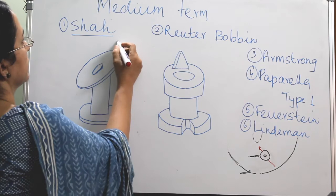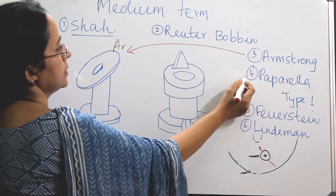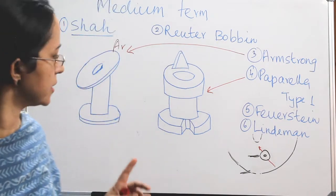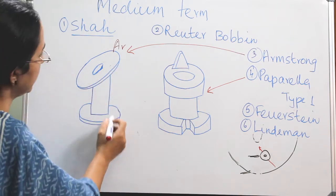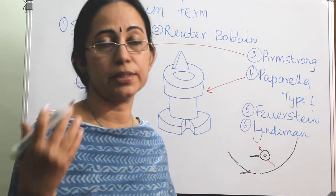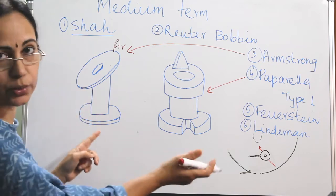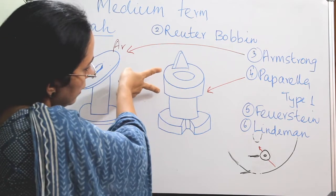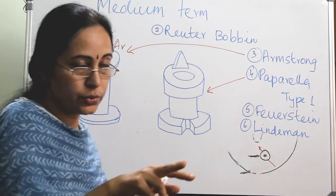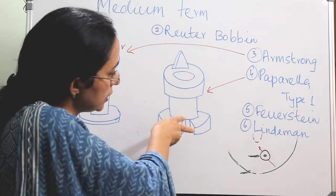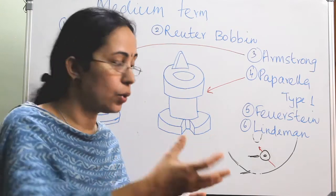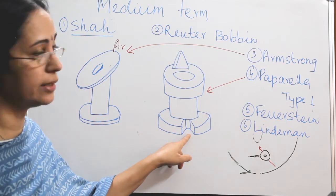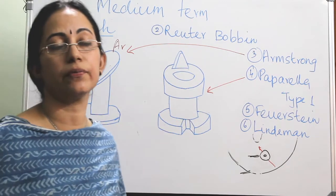The Armstrong tube and Paparella type 1 can both be introduced through a very small myringotomy incision. The inner flange is angled in a bivalve type design, making it easy to introduce through a small incision. The inner flange of the Paparella type 1 has a notch; you catch hold of the outer flange, introduce the notch of the inner flange through the incision, and then make a screwing movement so the entire inner flange goes below the myringotomy incision into the middle ear.